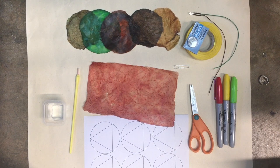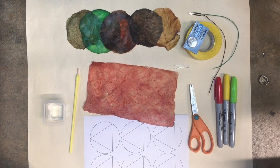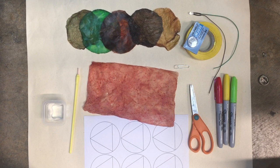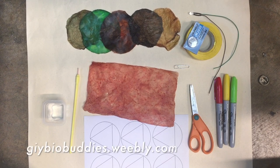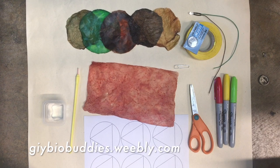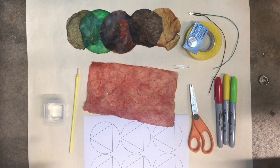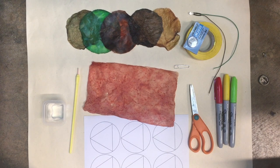The materials you're going to need are a bunch of kombucha leather, water or glue for attaching the kombucha pieces together, the folding template which can be found on the GIYBioBuddies website which is giybiobuddies.weebly.com. You also need scissors, an LED light, a coin cell battery, tape, preferably electric tape, and also other materials you want to use to decorate your lantern with.